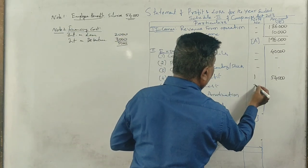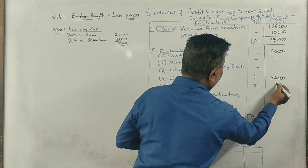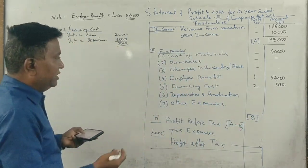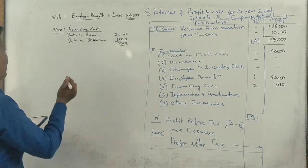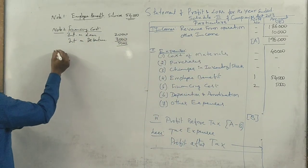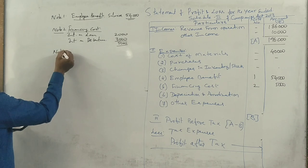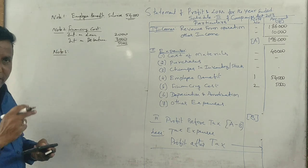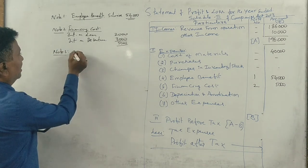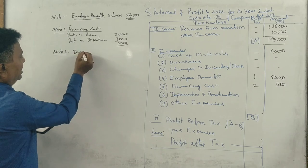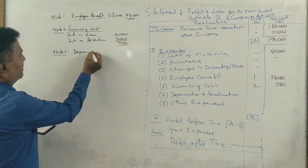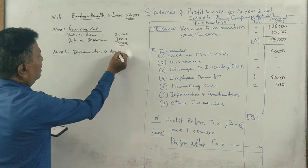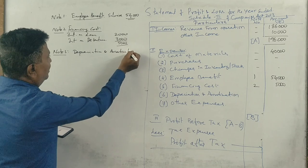Next, depreciation and amortization — this is very important. This problem is based on this, okay? Depreciation and amortization — what is it?